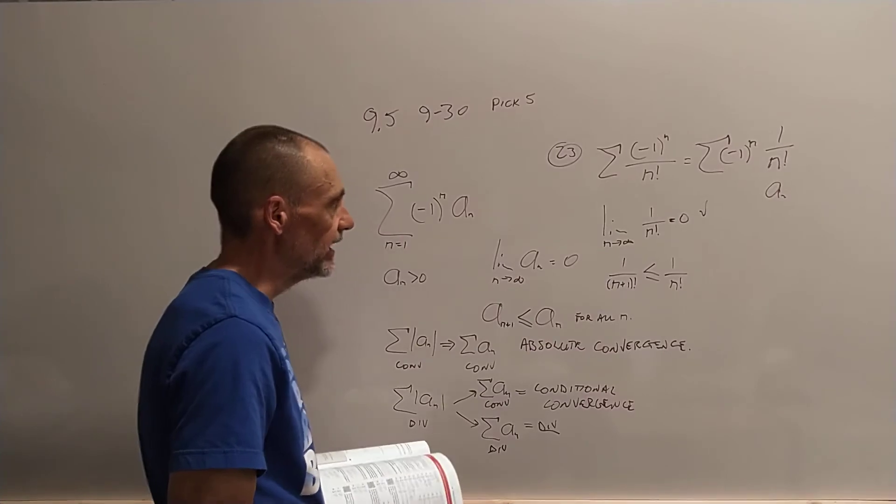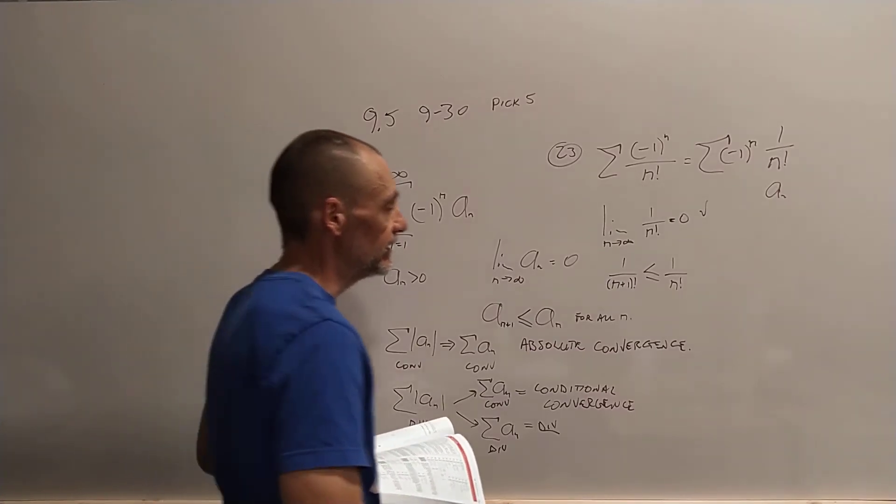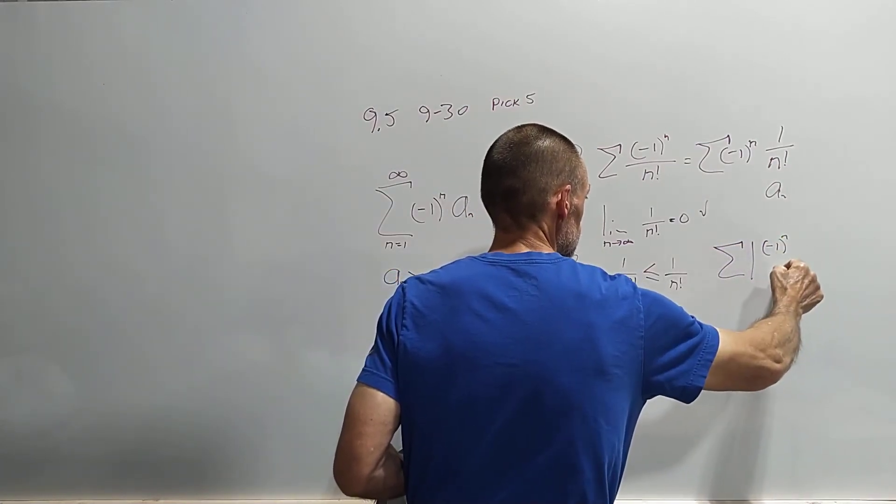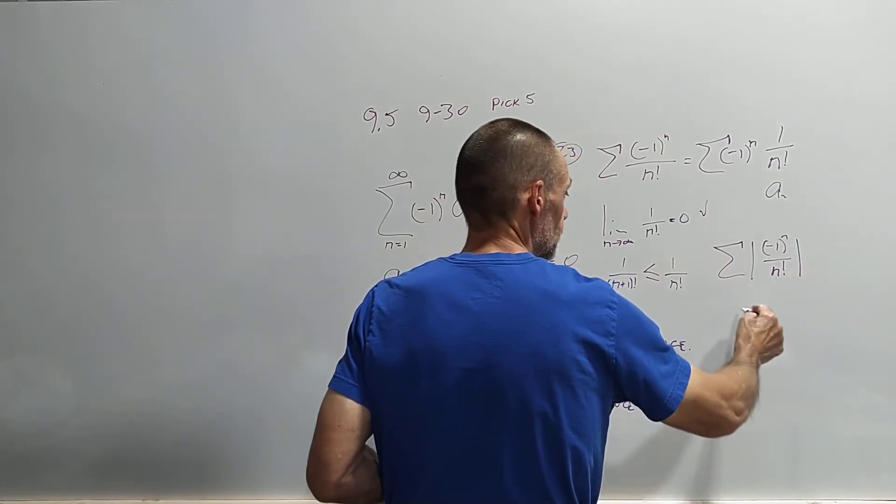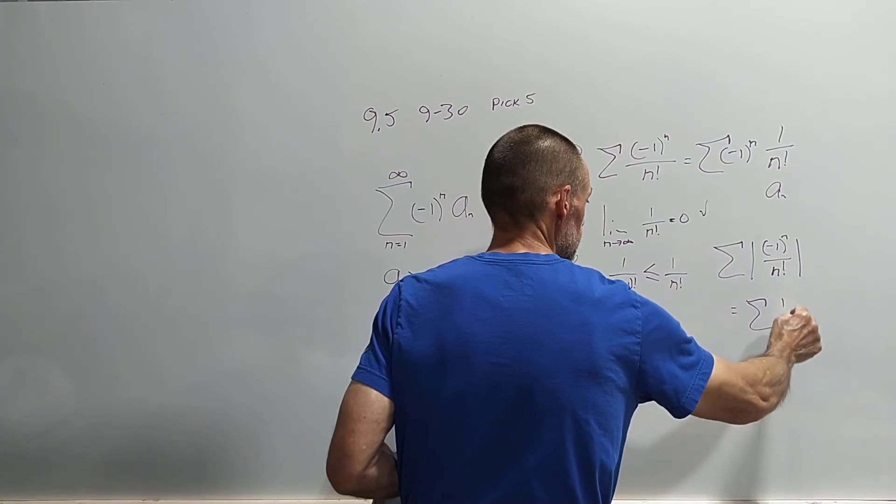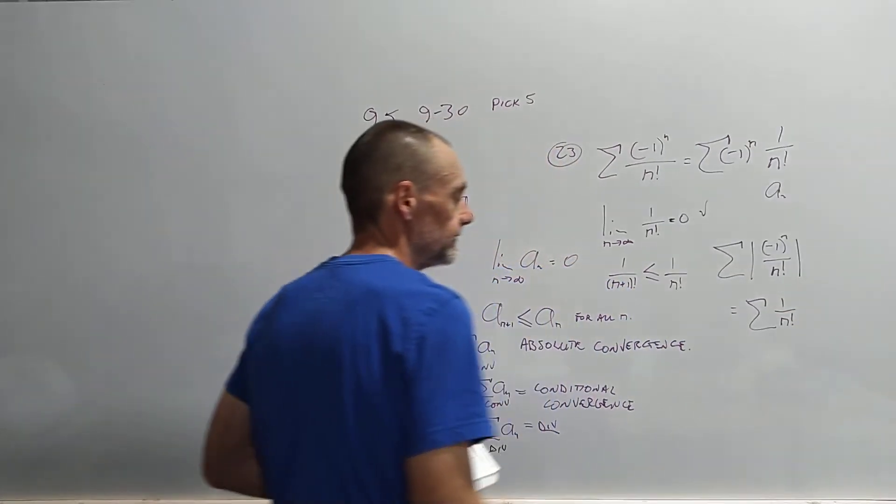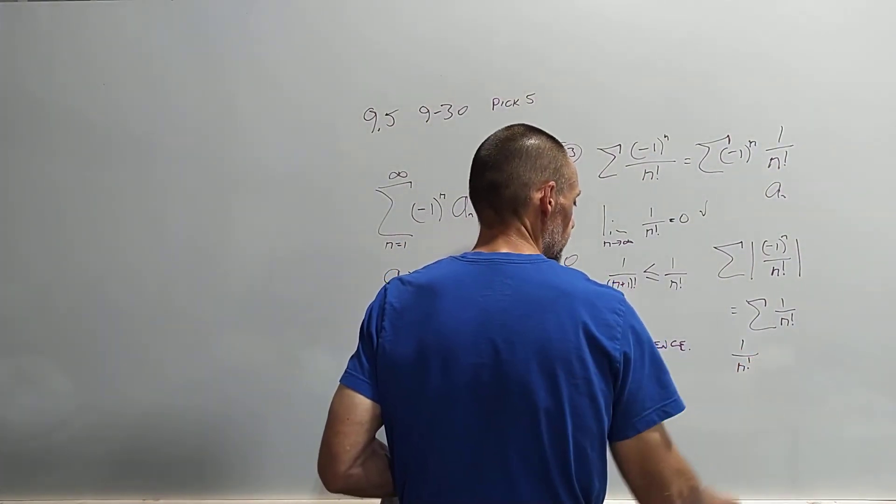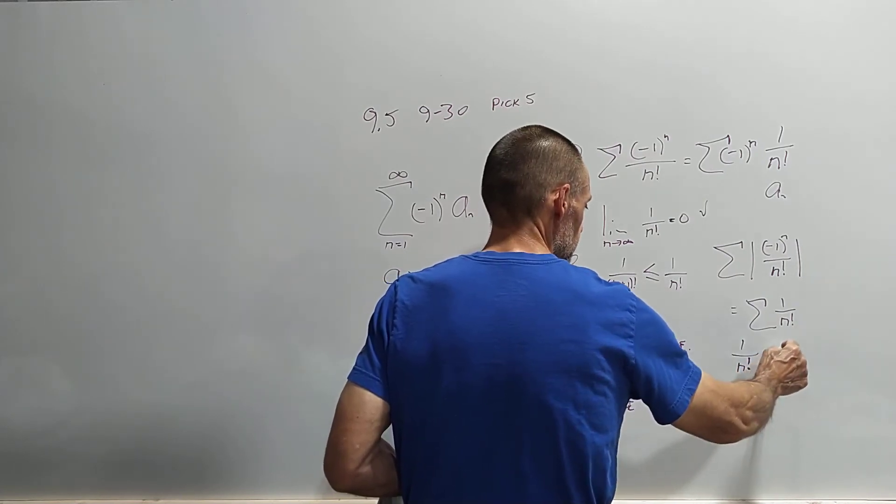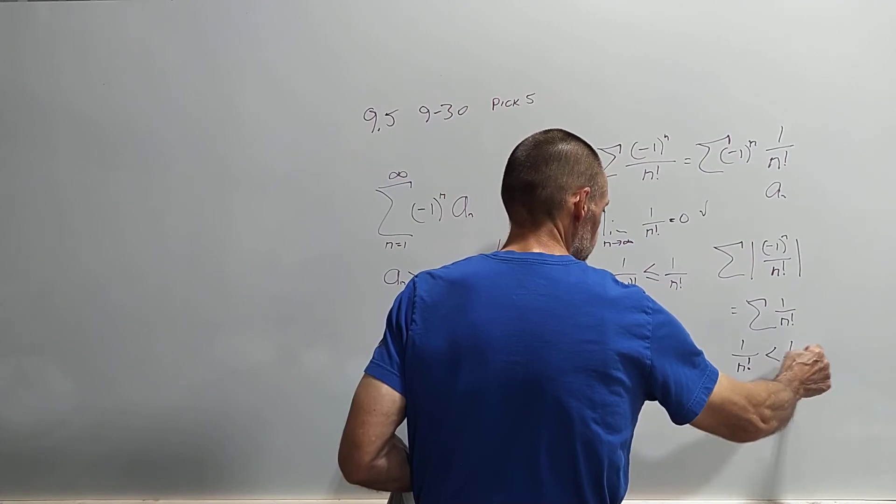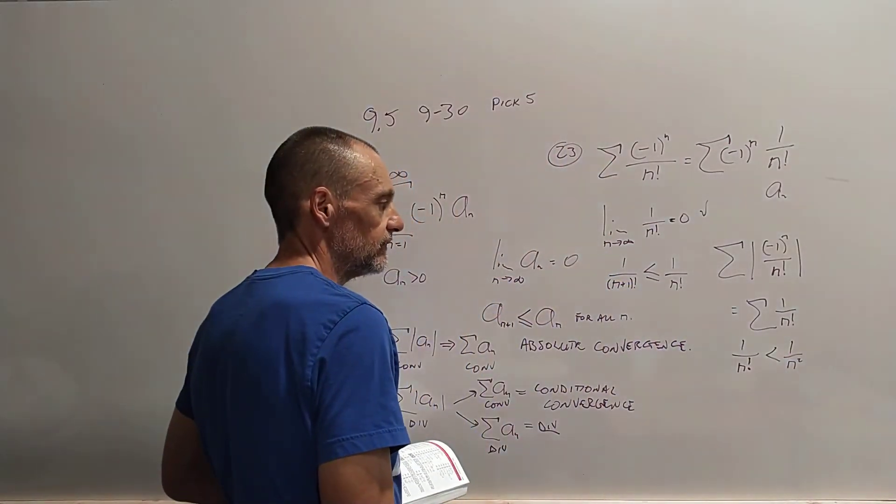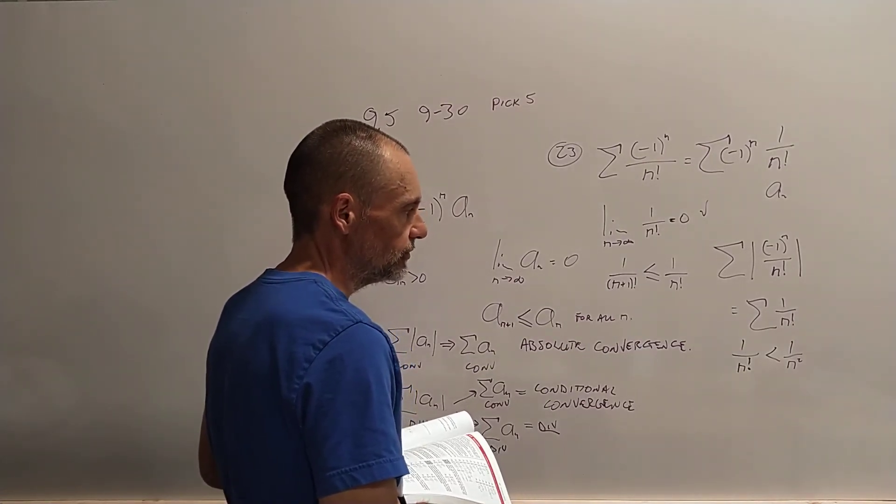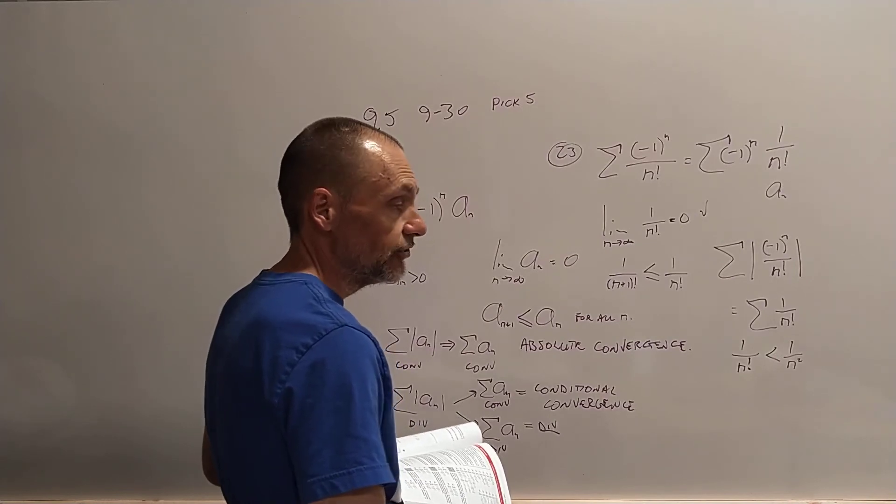So there's an example. And if you take the absolute value of this thing, you would get, which is this. And we can show that 1 over n factorial is going to be less than 1 over n squared, for example, for any n.